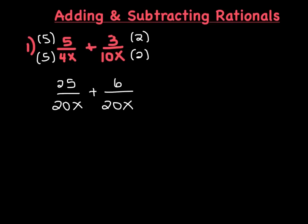Now once you have a common denominator, all you're going to do is add the numerators and keep the common denominator. So if you add 25 plus 6, that gives us 31, so we have 31 over 20x. You always want to look and see if you can simplify this. The only number that divides evenly into both 31 and 20 is 1, so it doesn't simplify. This would be our answer.